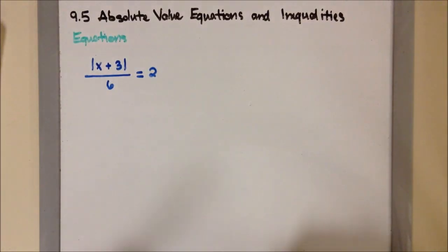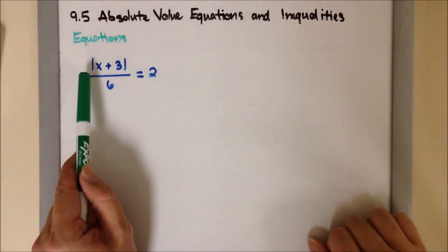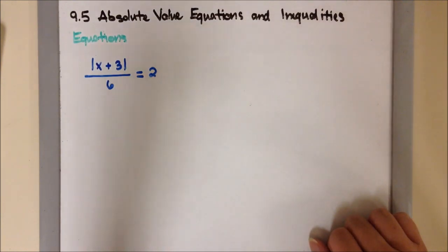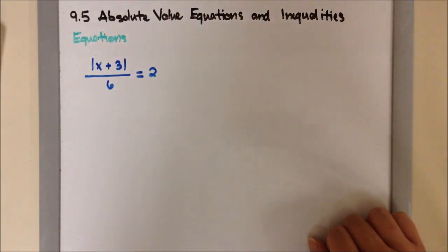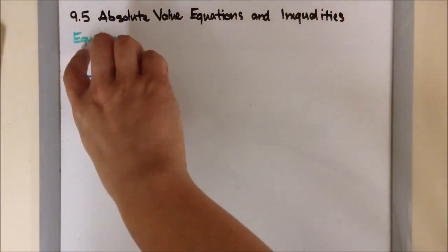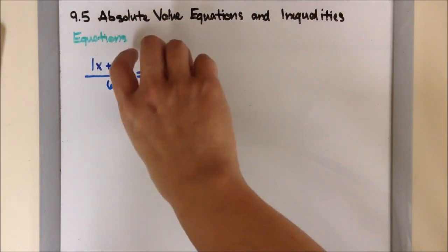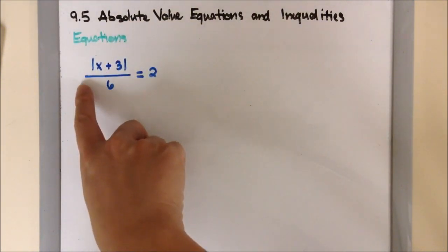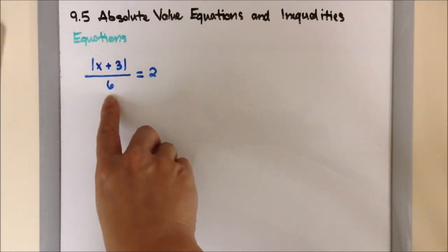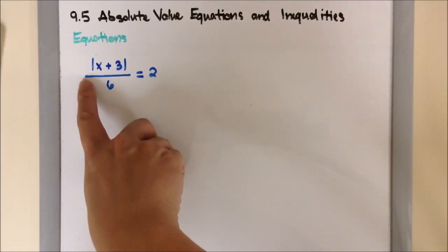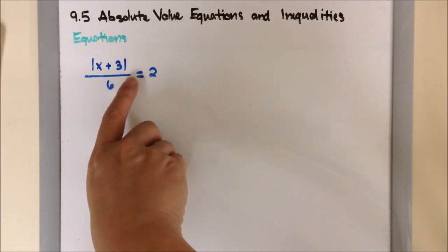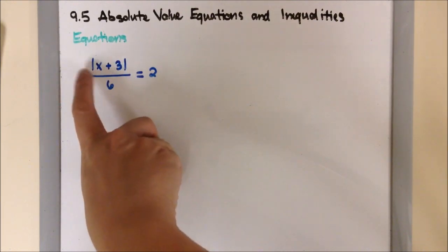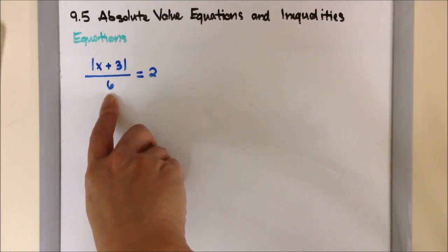In this example, we have the absolute value of x plus 3 over 6 equals 2. At the moment, there are no numbers in front of the absolute value and no numbers behind the absolute value, but we do have a number underneath the absolute value — a 6 underneath, with the fraction line extending beyond the absolute value symbol.